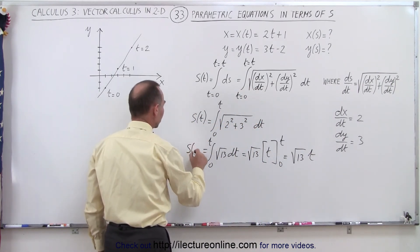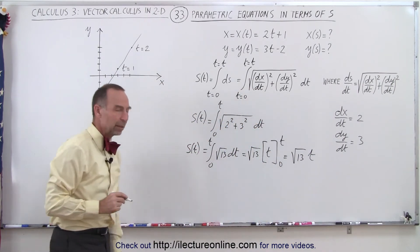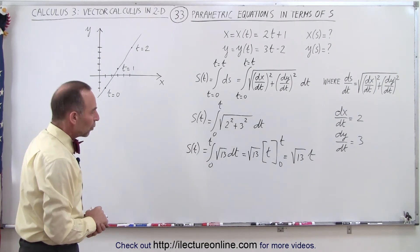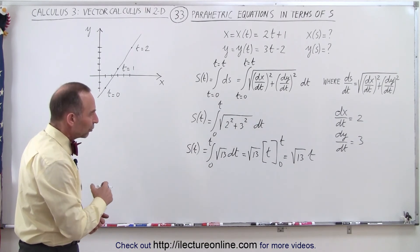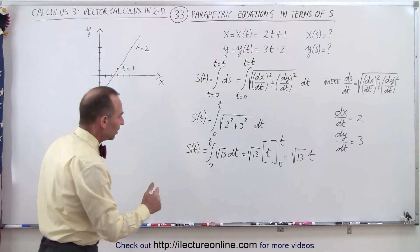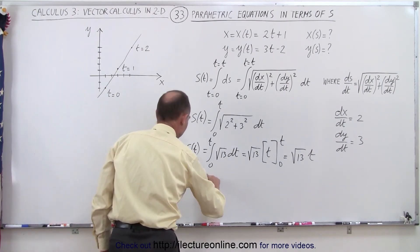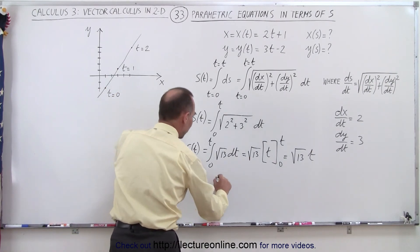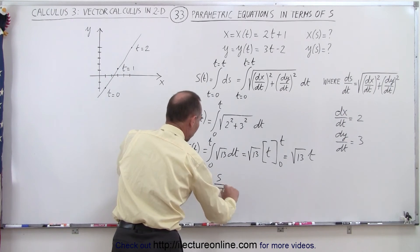And remember, this was equal to s of t. So if s is equal to the square root of 13 times t, that means, therefore, that t can now be replaced by s divided by the square root of 13.